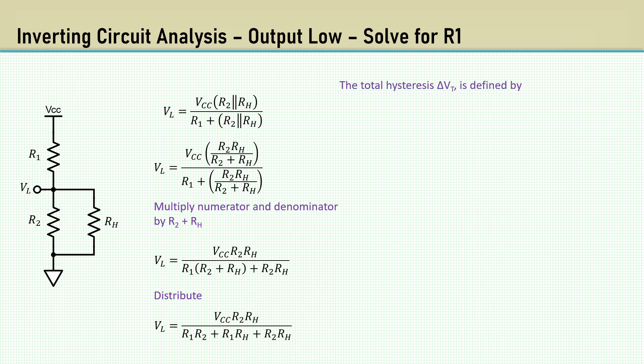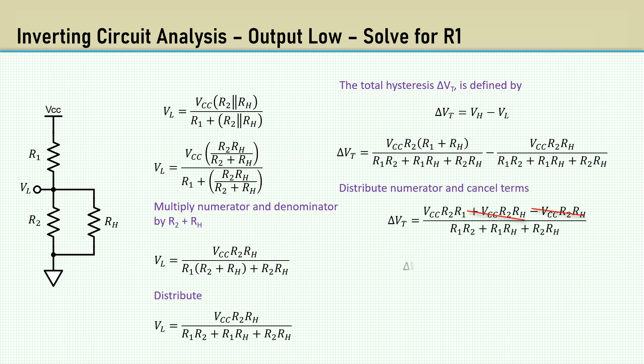The total hysteresis, delta VT, is VH minus VL. It's nice that they have the same denominator already. Distribute the numerator and cancel terms. Notice that the equation for delta VT and VL are exactly the same except for RH and R1, so dividing delta VT by VL gives us the ratio of R1 to RH, then rearranging to solve for R1.